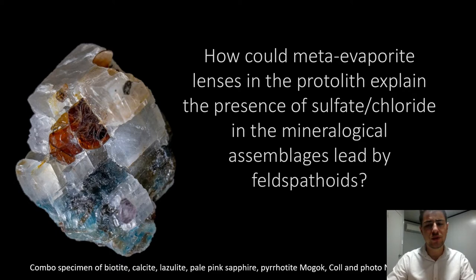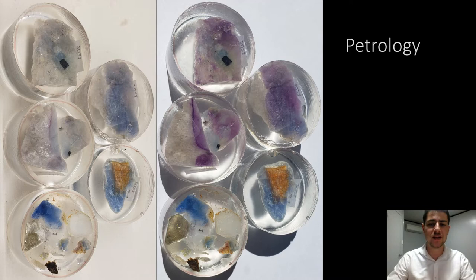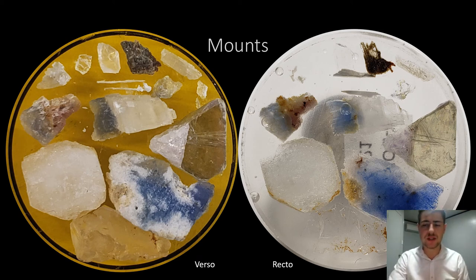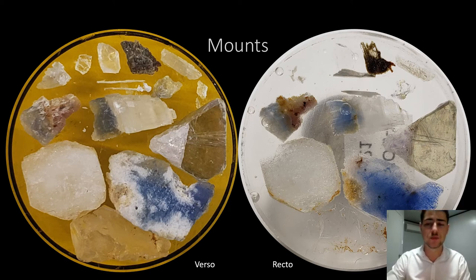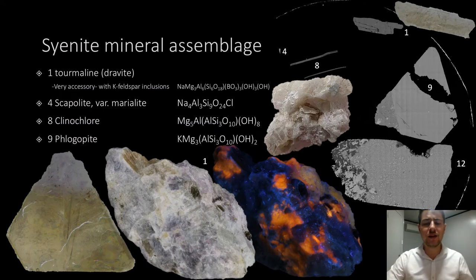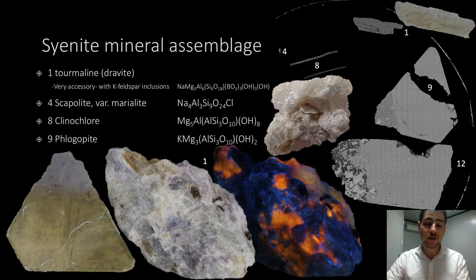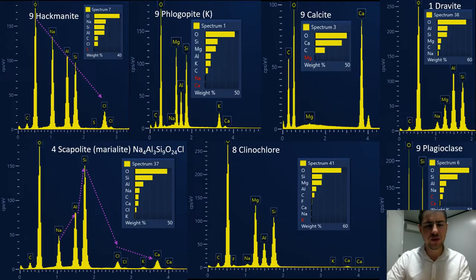How could meta-evaporite lenses in protolith explain the presence of sulfate in chloride minerals? Only a few of these Pein-Pyit samples were analyzed yet. We isolated the really nice pure phases to have some quantitative mineralogy. Positively identified minerals include mostly scapolite, the marialite type, so the sodic one, clinochlore, phlogopite, hackmanite obviously, and then minor accessories like tuhualite.